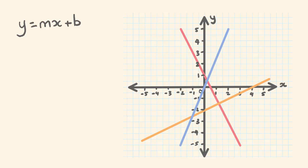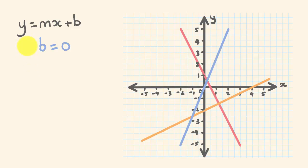The second example is the blue line, and we're going to work out its equation. Once again, let's work out the y-intercept first. Where do we go through the y-axis? You're going to see we go through at 0 — b is equal to 0. Now let's work out the gradient. m is equal to the rise over the run.